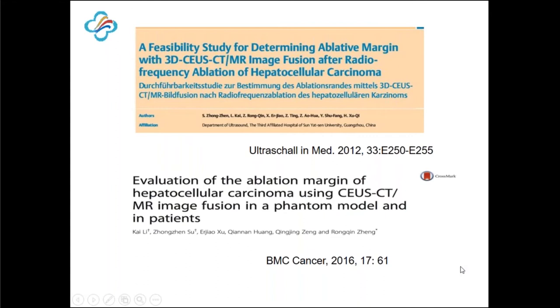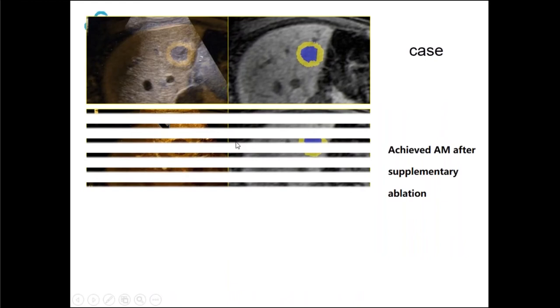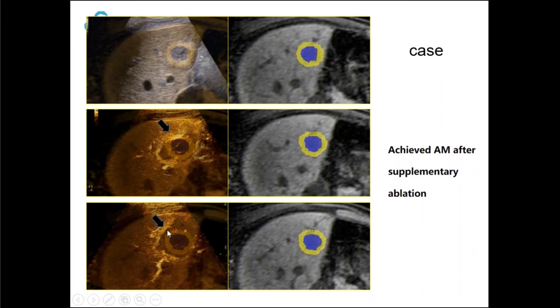These are our two published papers on this. We also perform this evaluation intraoperatively, because if we can show the ablative margin has not been achieved, we can do complementary ablation to change the unachieved ablative margin into an achieved one. For this case, after the first ablation, the ablative margin had not been achieved in one part. We then did supplementary ablation on that part, achieving complete coverage of the whole tumor with a five-millimeter ablative margin.